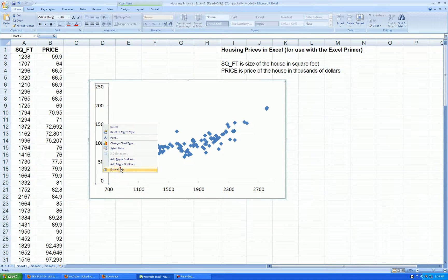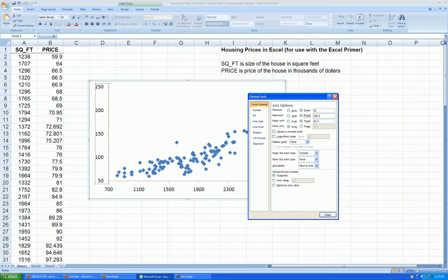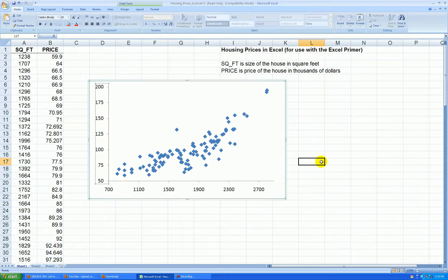Right-click on the Y axis. Let's change the min, max, and major unit. It's 200 and increments of 25. OK.